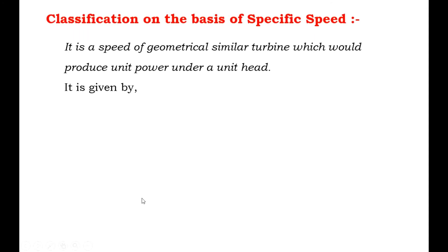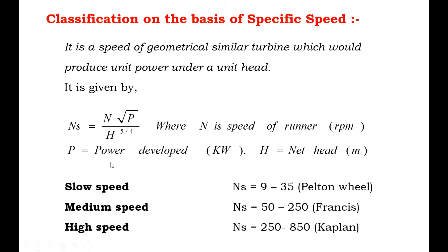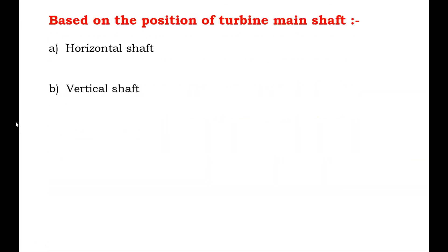The next classification is based on specific speed. Specific speed is the speed of a geometrically similar turbine which would produce unit power under a unit head. Based on specific speed, turbines are classified into slow speed, medium speed, and high speed ranges. The next classification is based on the position of the turbine main shaft: horizontal shaft and vertical shaft.